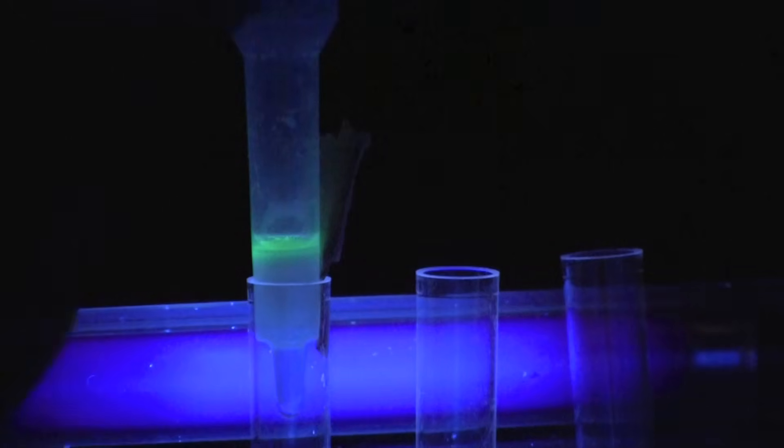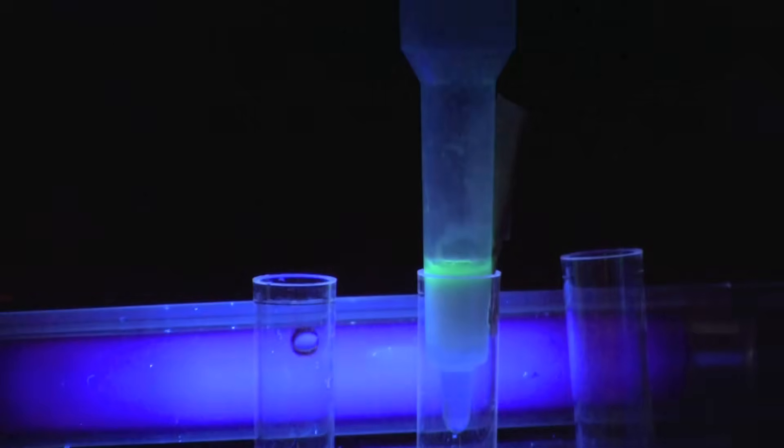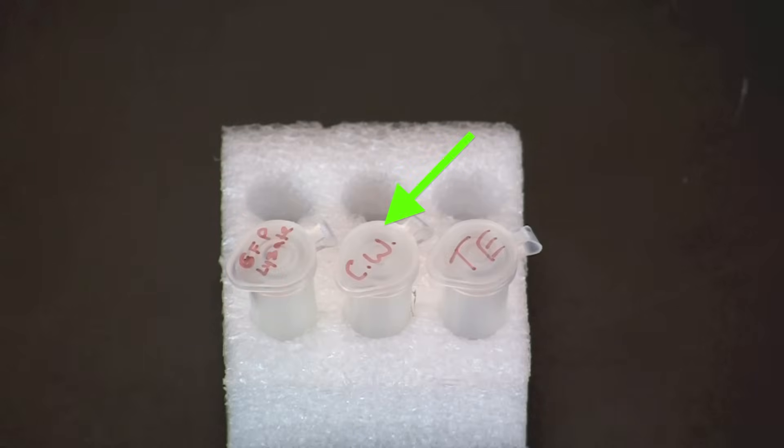Transfer the column to collection tube number two. The remainder of this activity can be performed in a darkened room with a handheld UV light to increase the visibility of the GFP. Allow the lysate to enter the column bed until the meniscus is within one to two millimeters of the surface of the resin.